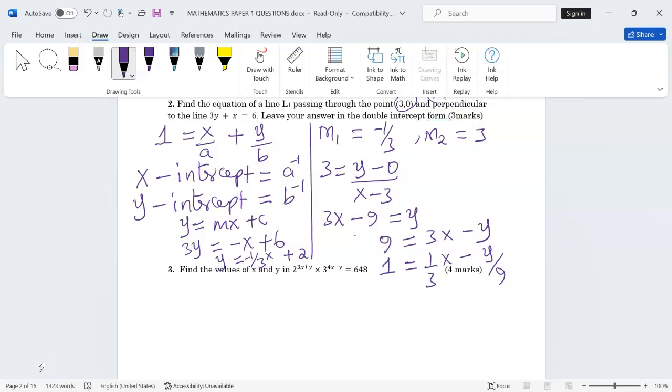With this equation, because it is already in the double intercept form, the x-intercept will be 3 and the y-intercept will be -9.